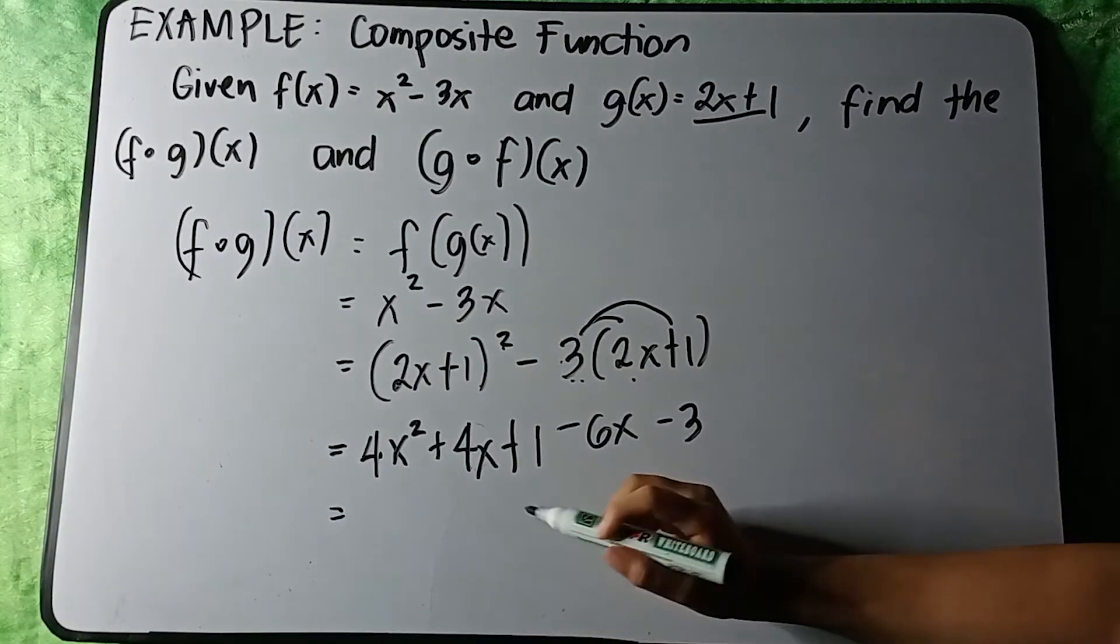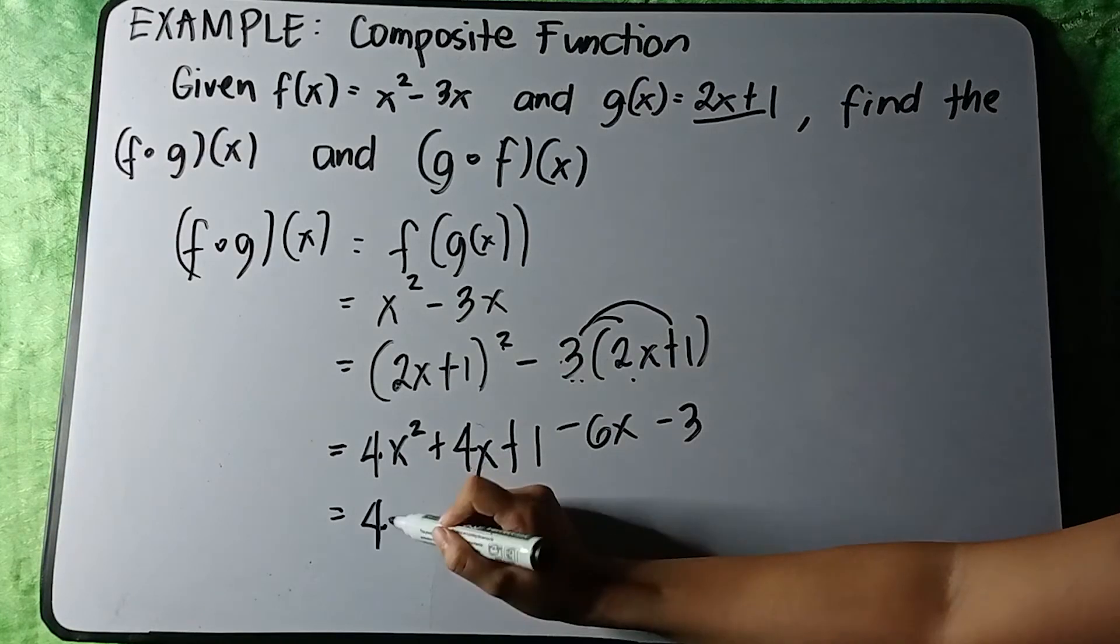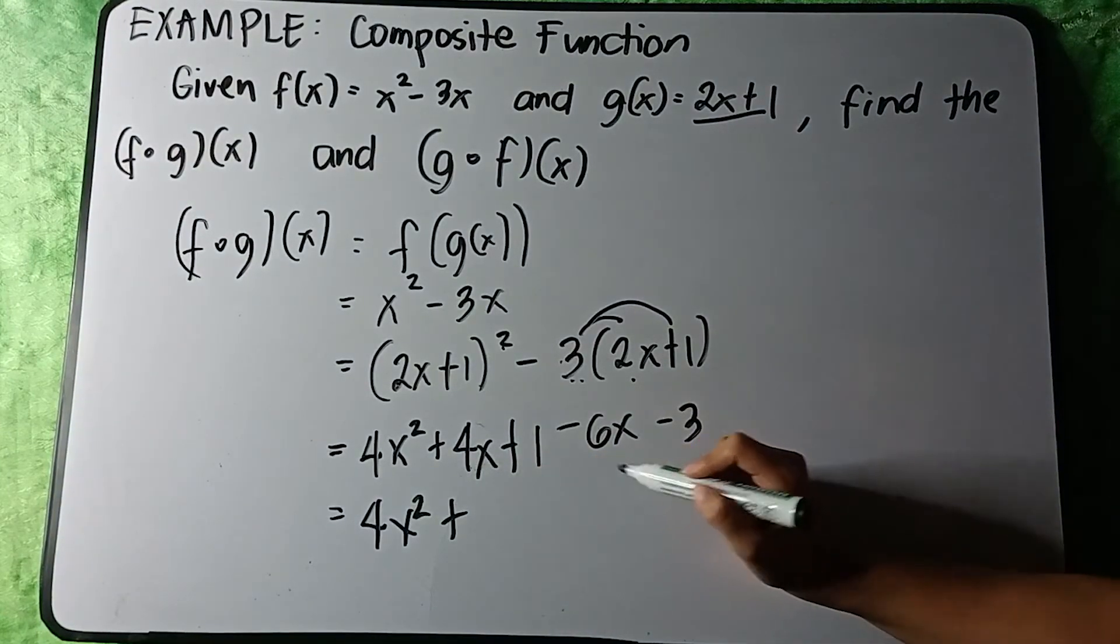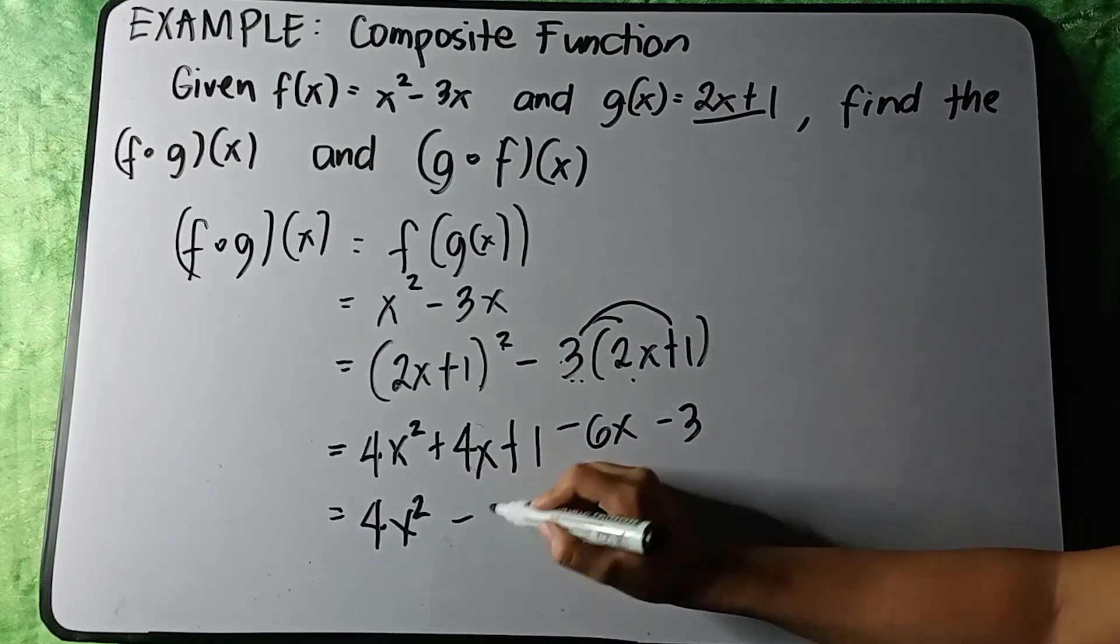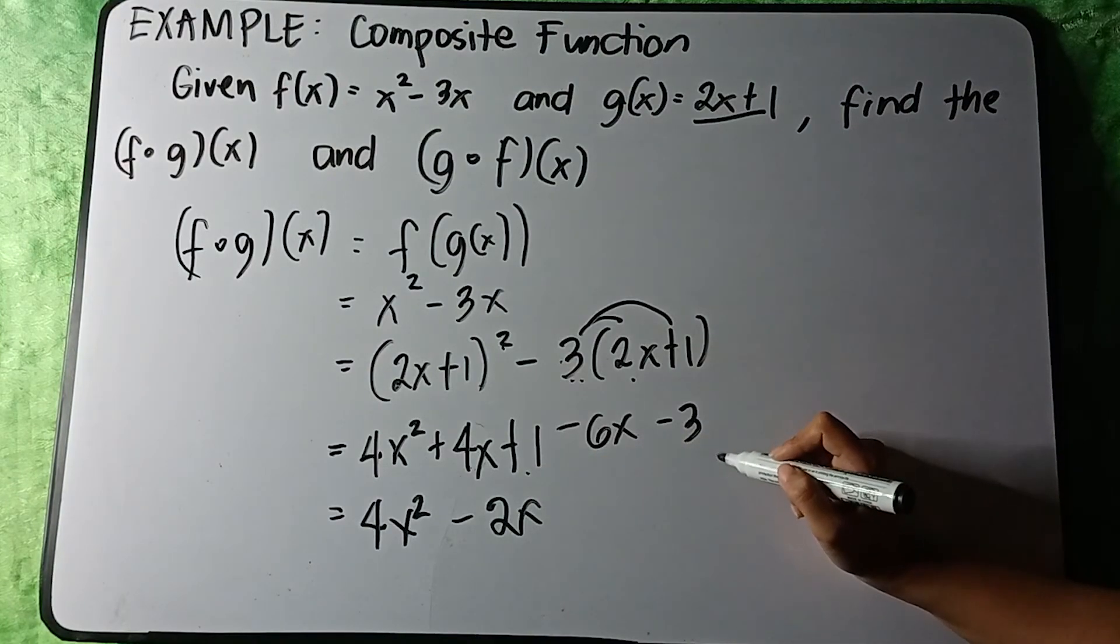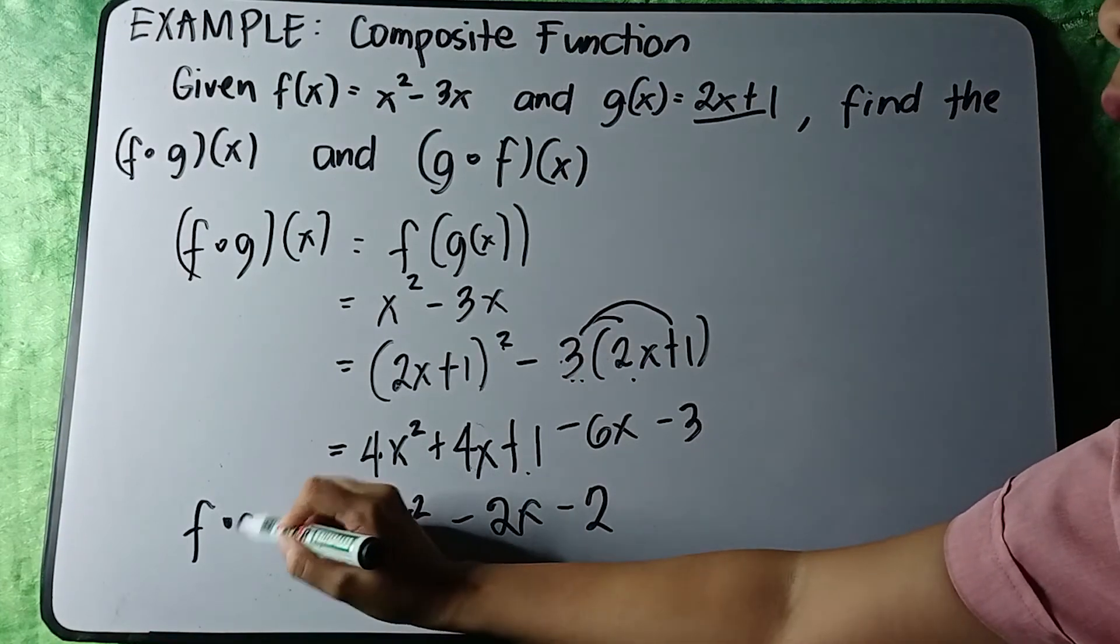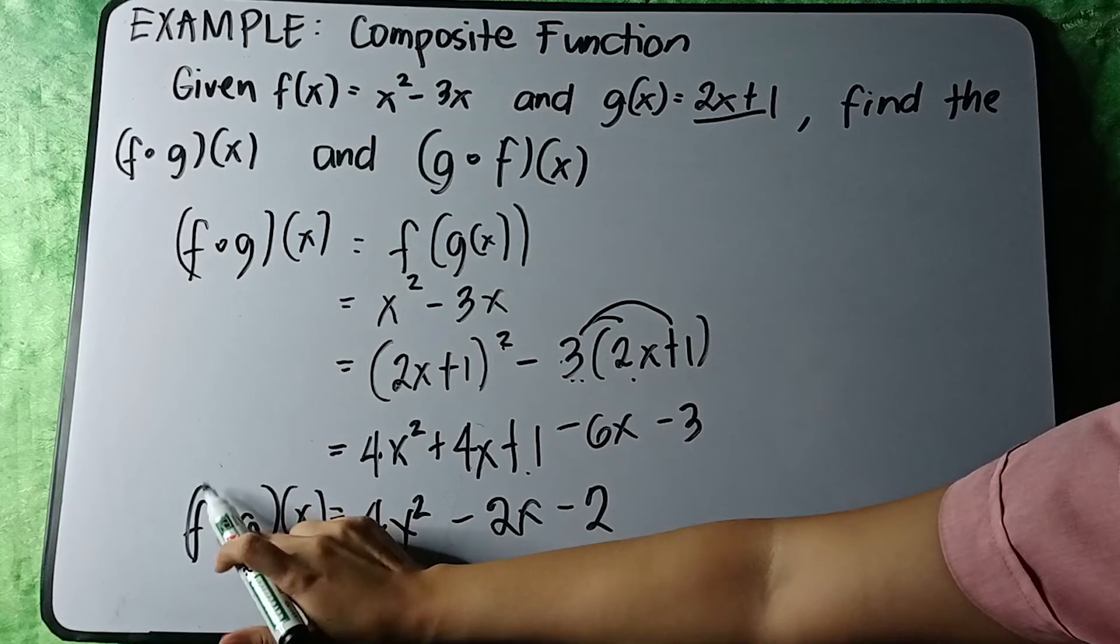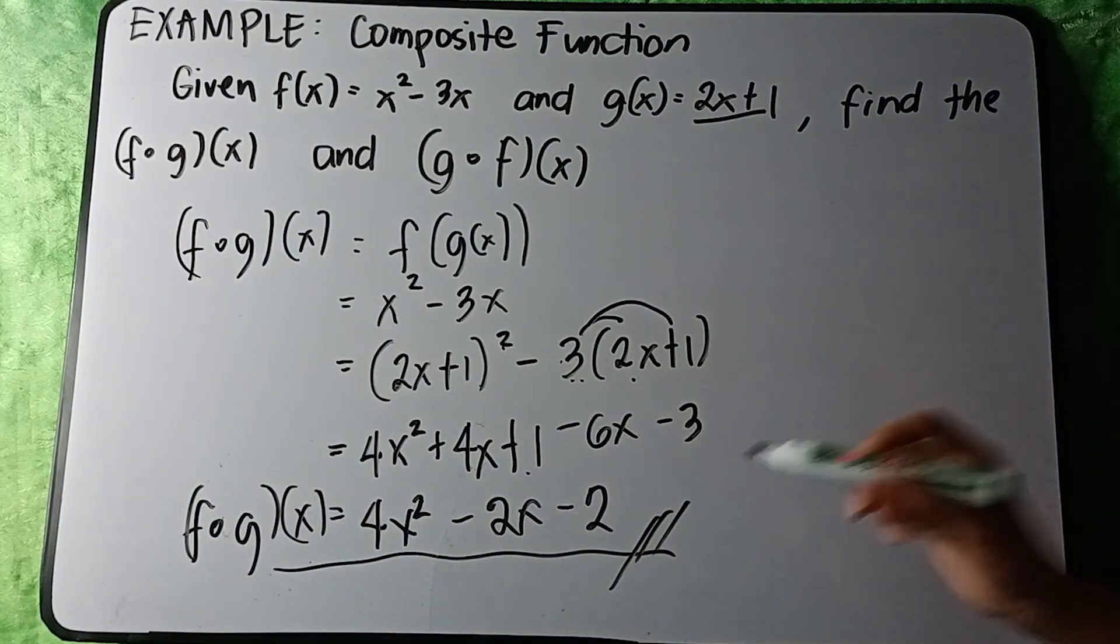Let us now simplify this to get the composite function. We have 4x² + 4x - 6x, which equals -2x. Then 1 - 3 = -2. So f(g(x)) = 4x² - 2x - 2.